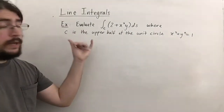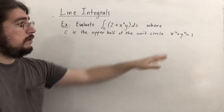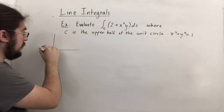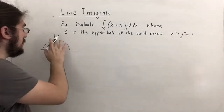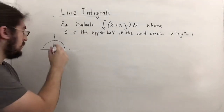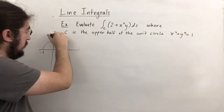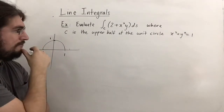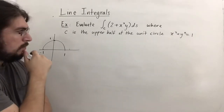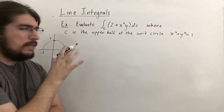For our first example, we want to evaluate a line integral along the upper half of the unit circle, x squared plus y squared equals 1. This is the upper semicircle with x going from negative 1 to 1, and y from 0 to 1. To apply the theorem, we need parametric equations in terms of t. Something about orientation is not stated in the problem, but I don't think it's too big of a concern here.